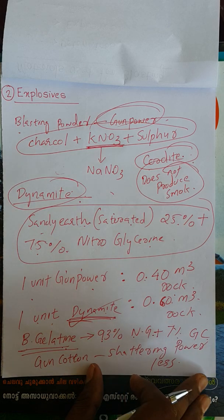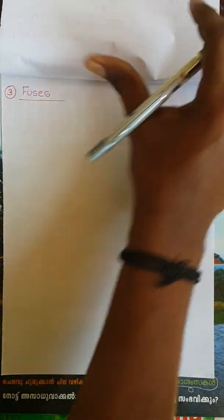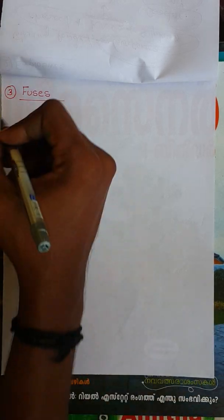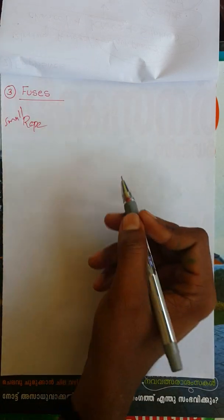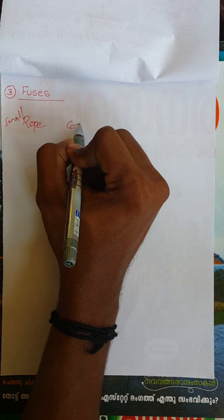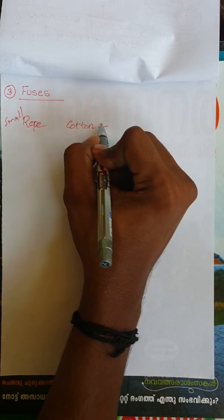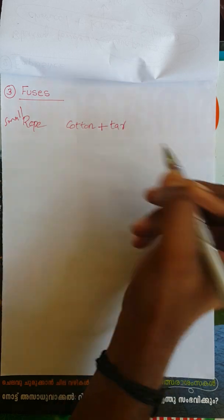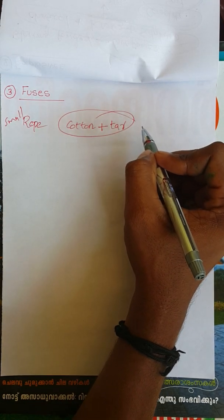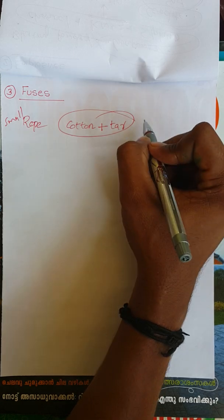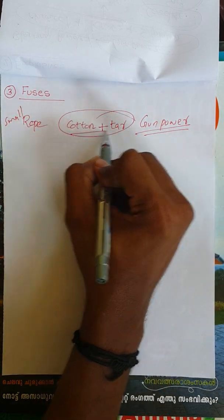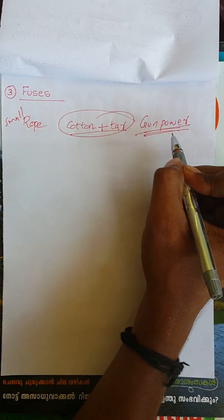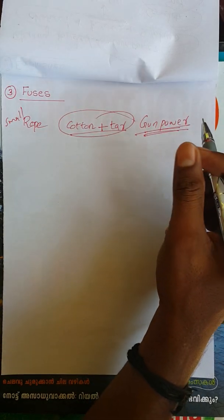Now, how do we ignite the explosive? We use a fuse. What is a fuse? It is a small rope made of cotton, with a thick core filled with fine gunpowder.